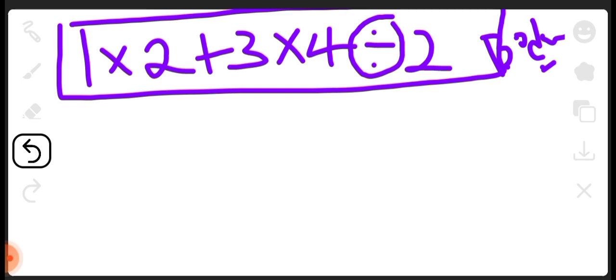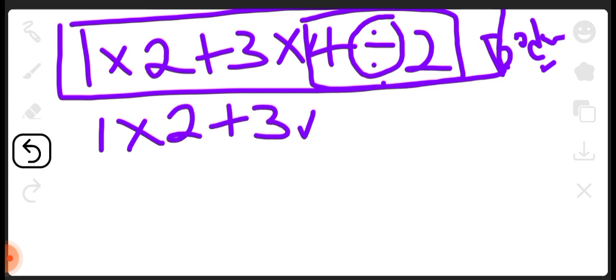So what are we going to do? We apply this division first. 4 divided by 2 is 2, so we have 1 times 2 plus 3 times 2. And again from the same BODMAS...